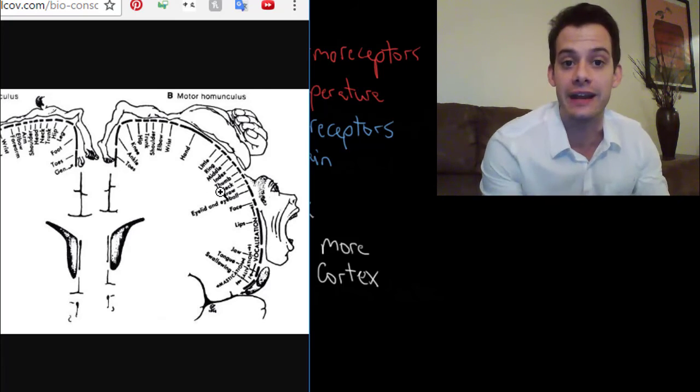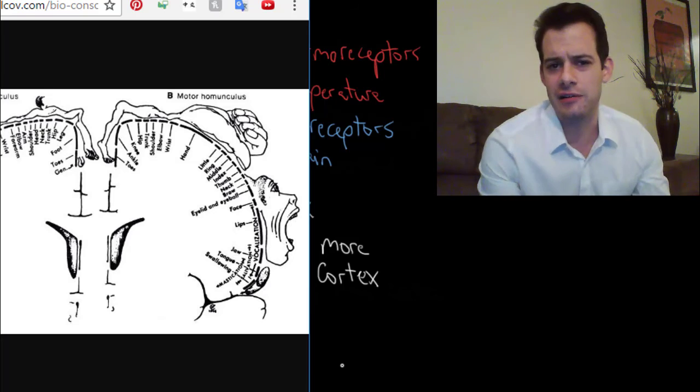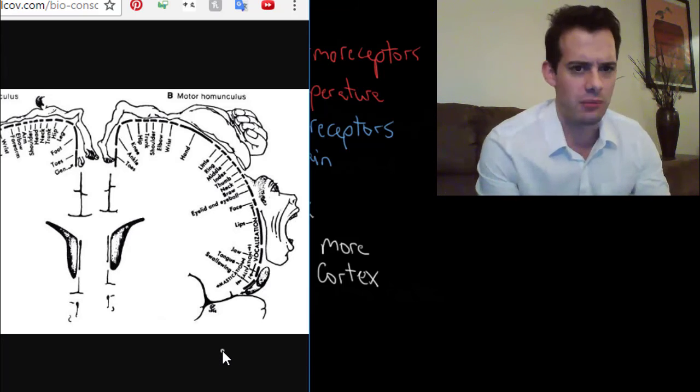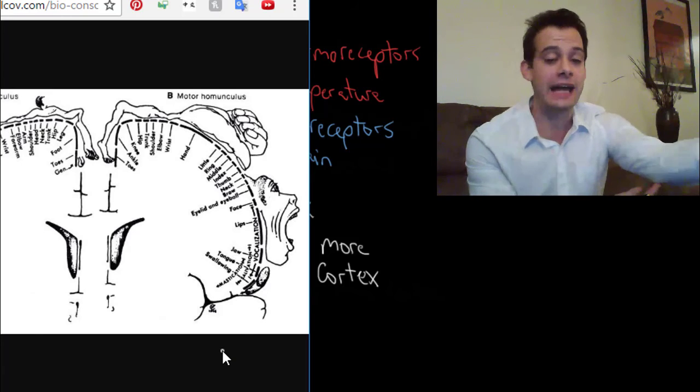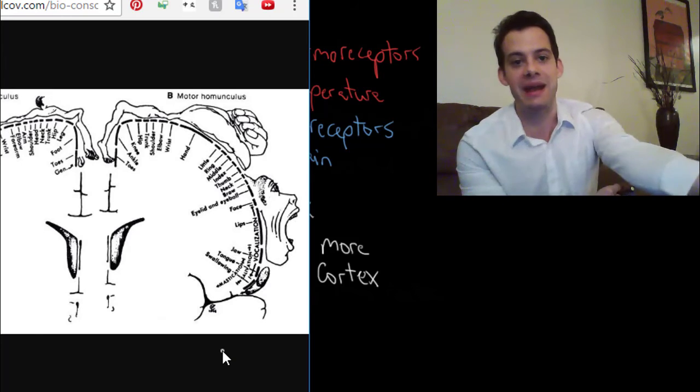And then your hands, of course you can move them in a seemingly infinite number of ways. Whereas the rest of your joints, the rest of your body movements are pretty simple. I mean, your elbow, how much can you really do with that? And the answer is not very much. You can bend it, you can straighten it. That's about it.